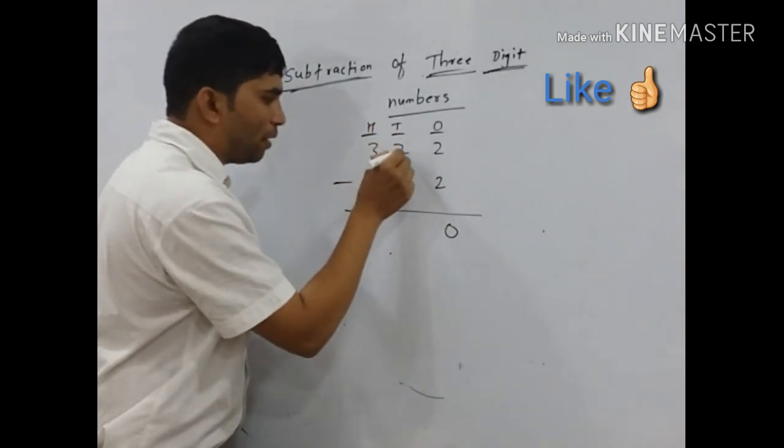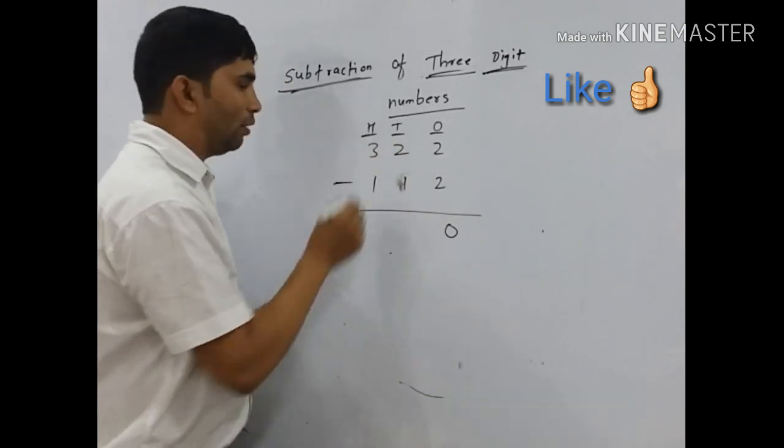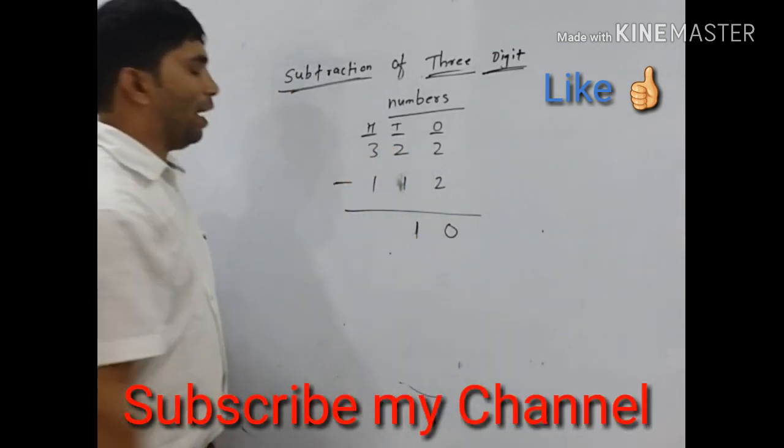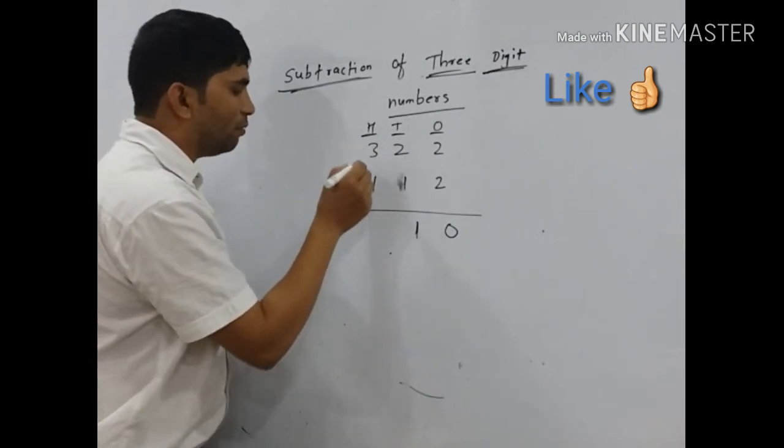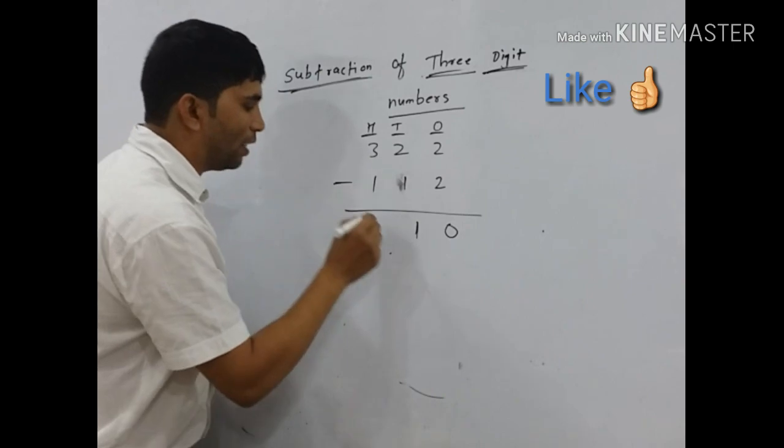Next tens place number 2 subtract with 1 means 2 minus 1 we get 1. And next hundreds place number 3 minus 1 we get 3 minus 1 equals 2.